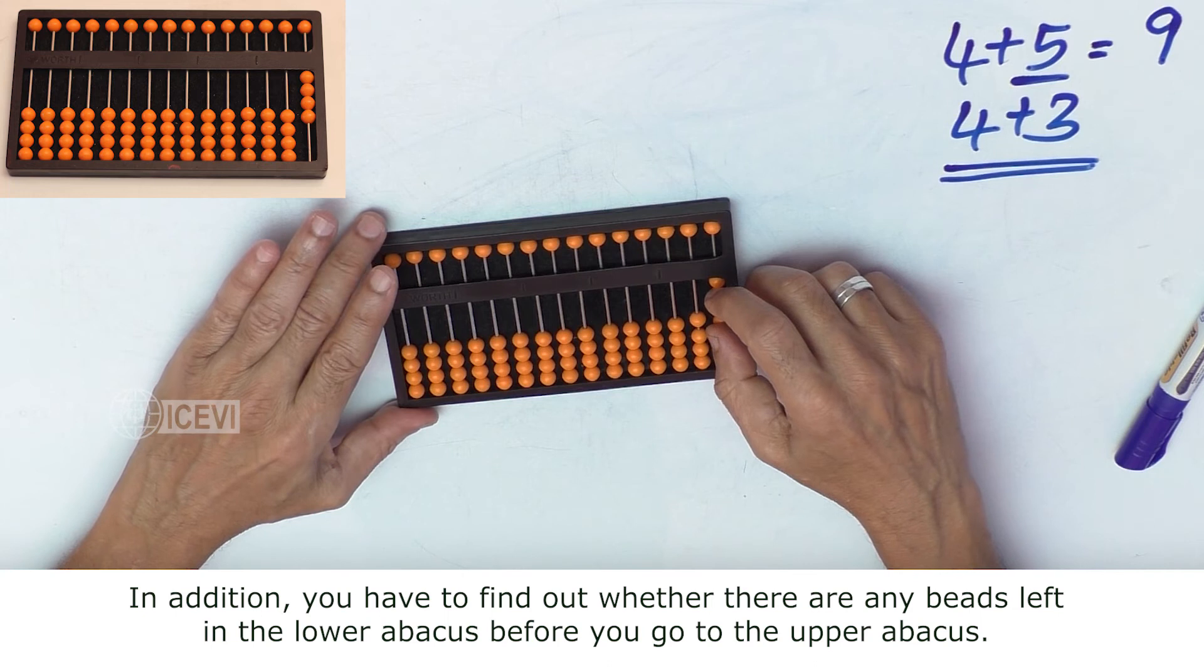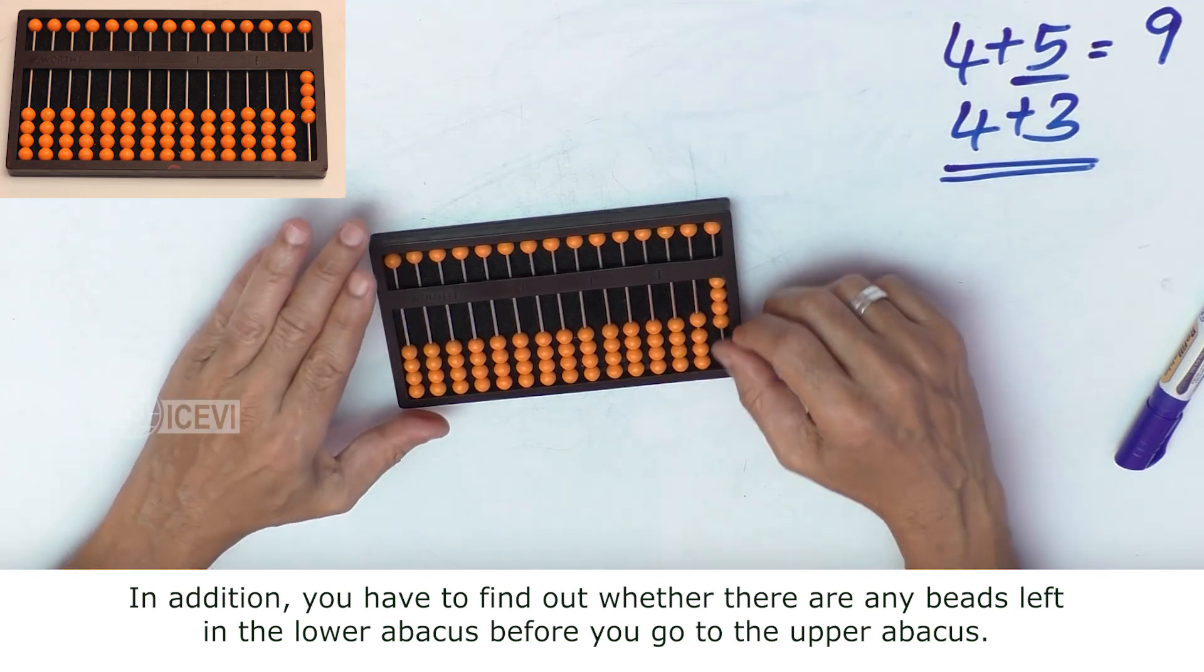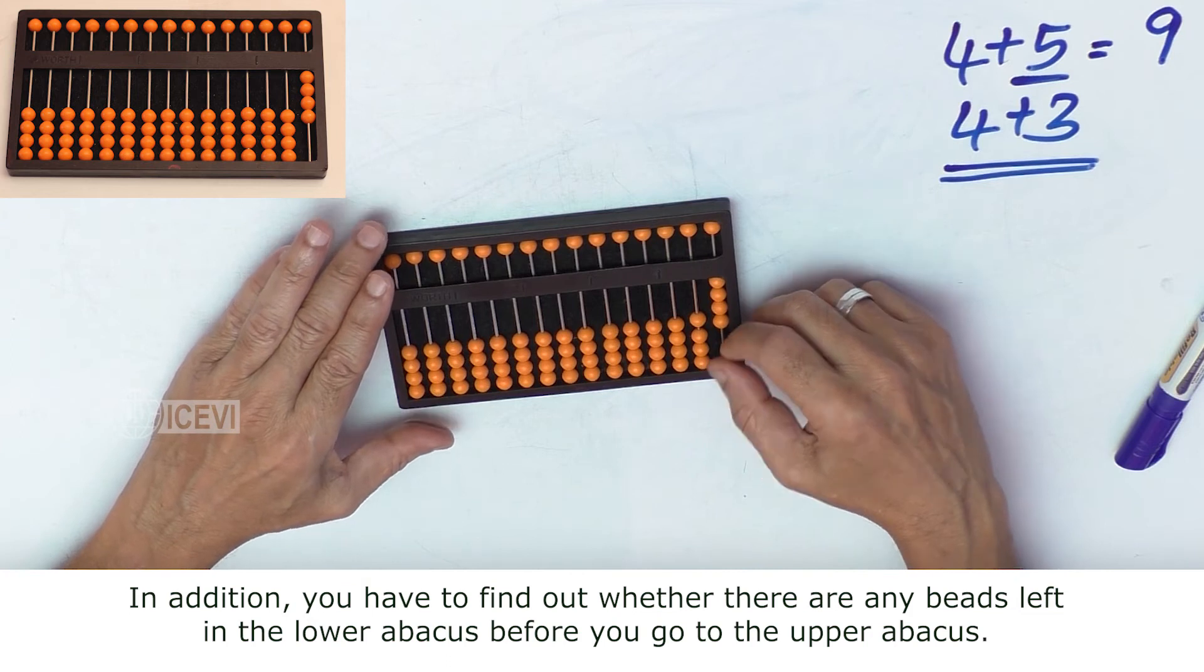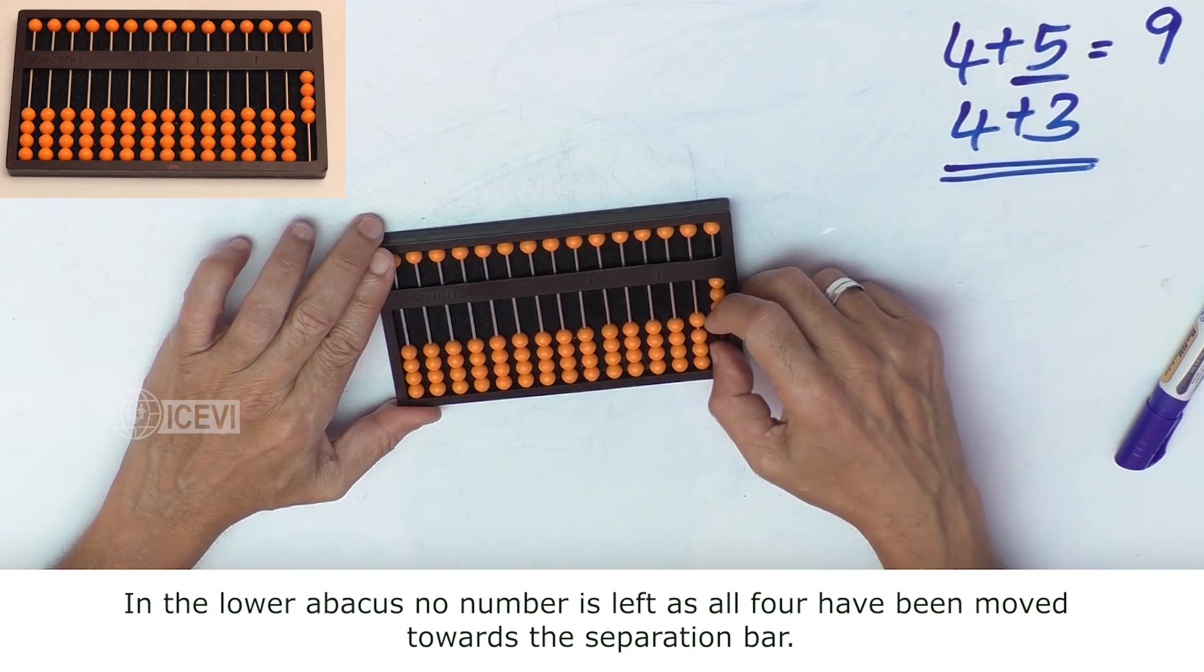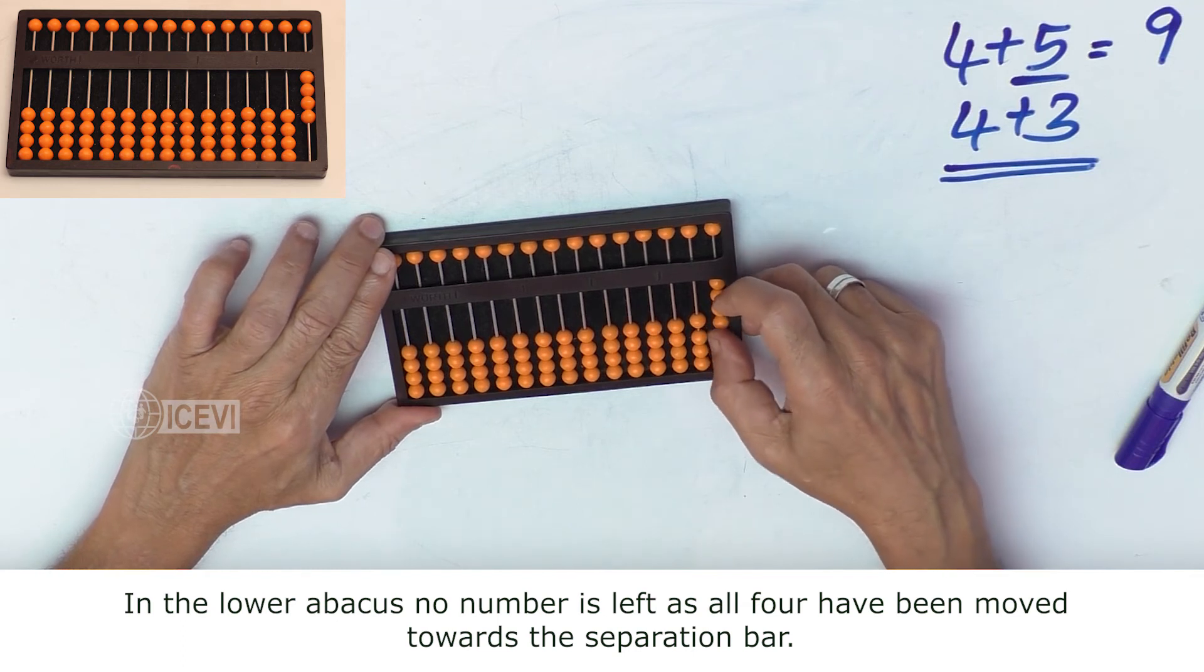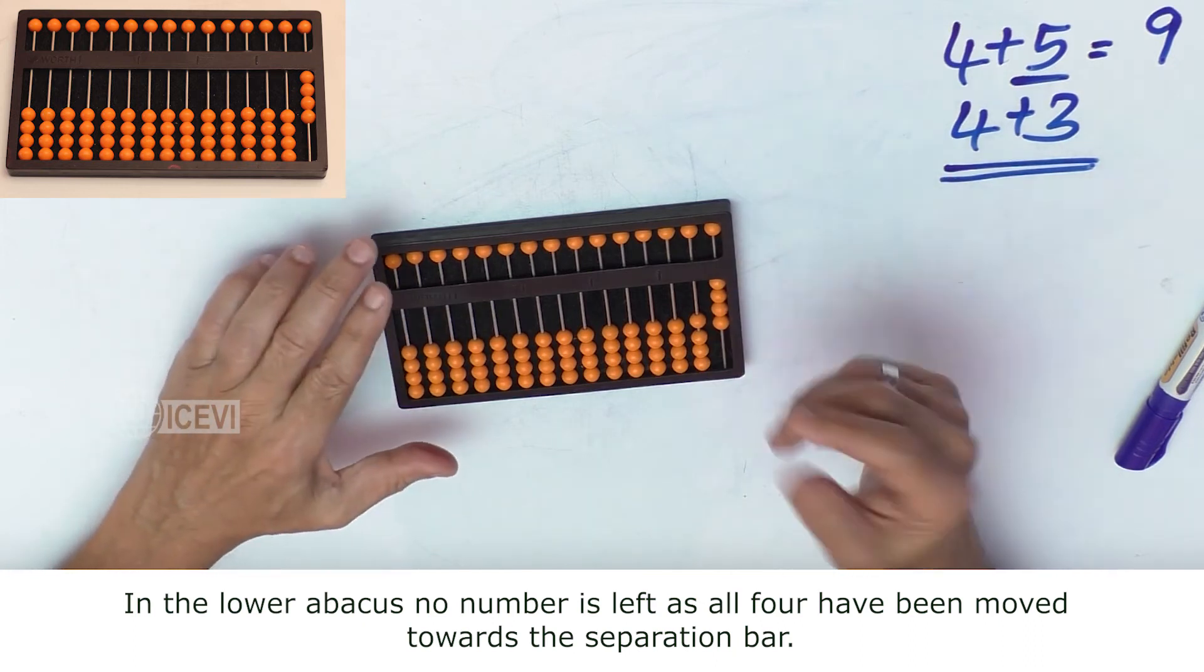In addition, you have to find out whether there are any beads left in the lower abacus before you go to the upper abacus. In the lower abacus, no number is left as all 4 beads have been moved towards the separation bar.